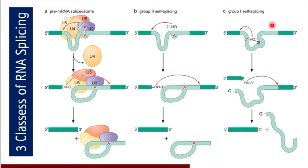One most important point to mention: although these introns can splice themselves out of an RNA molecule unaided by proteins in vitro, in vivo they typically do require protein components to stimulate the reactions. So in vitro they may not require proteins, but in vivo they require proteins to stimulate the reaction.